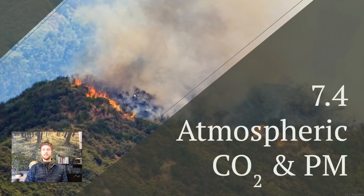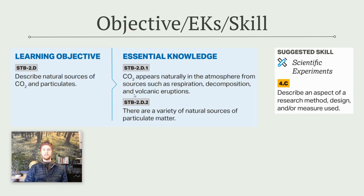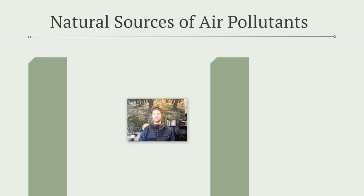Hey everybody, it's Mr. Smeeds. Welcome to APES video notes for topic 7.4, which will cover atmospheric carbon dioxide and particulate matter. Our objective for the day is to describe the natural sources of carbon dioxide and particulates in the atmosphere. At the end of today's video, we'll practice the skill of describing a measure, procedure, or variable used in a scientific experiment. We'll start by looking at natural sources of various air pollutants, then get more specific with carbon dioxide and particulates.